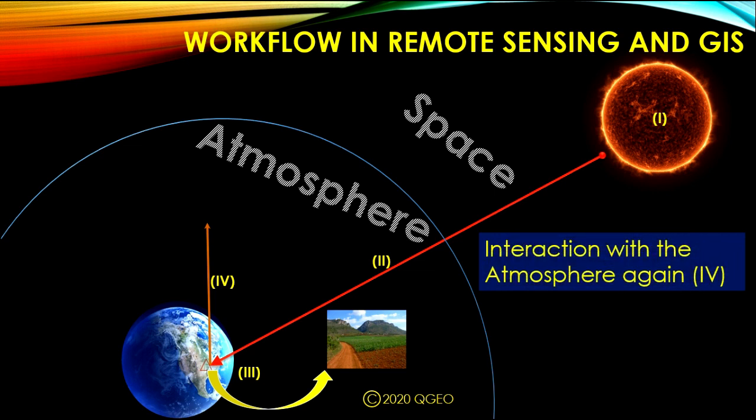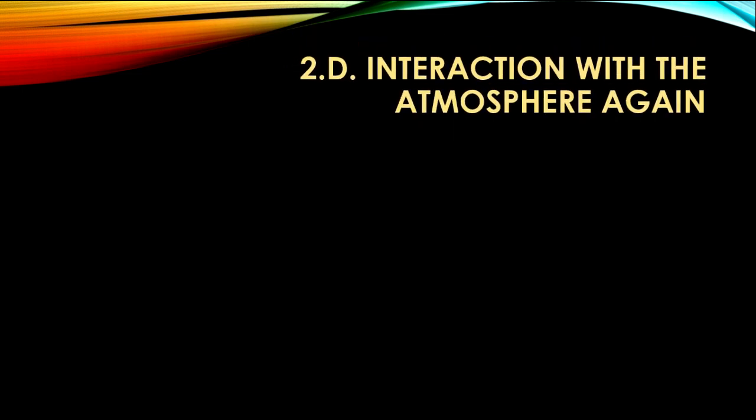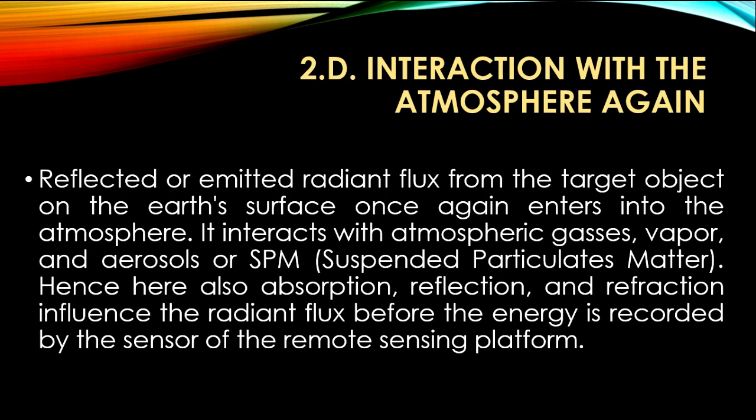Interaction with the atmosphere again — in the workflow of remote sensing and GIS. Reflected or emitted radiant flux from the target object on the Earth's surface once again enters into the atmosphere. It interacts with the atmospheric gases, vapour, and aerosol or SPM — suspended particulate matter.